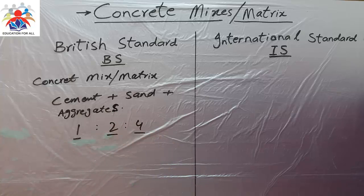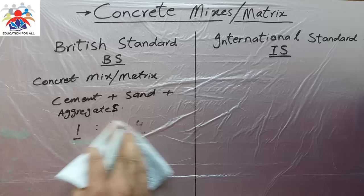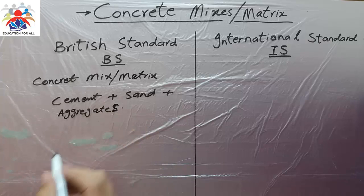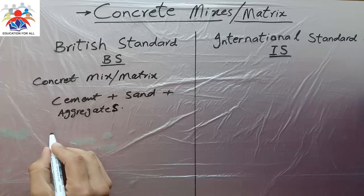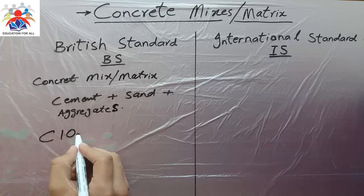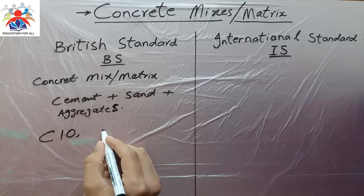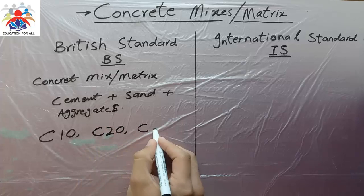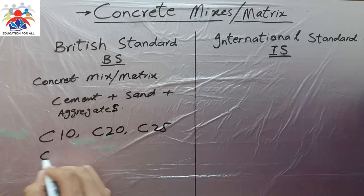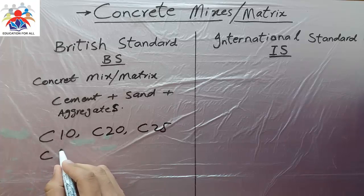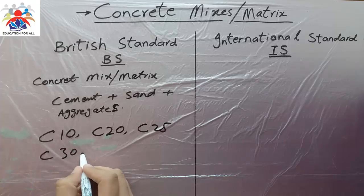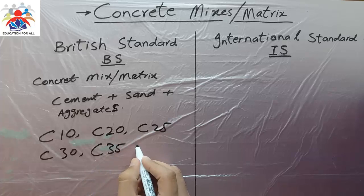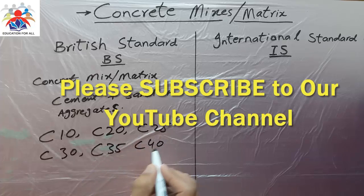Now I'm going to explain what kind of grades the British Standard uses. They normally use C10, C20, C25, C30, C35, and C40.